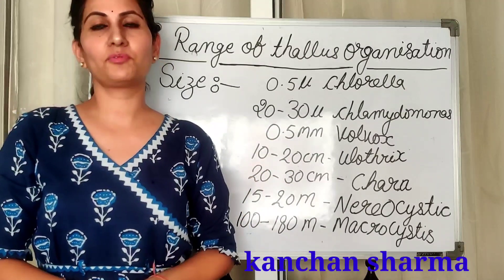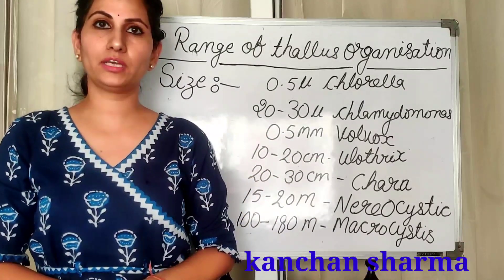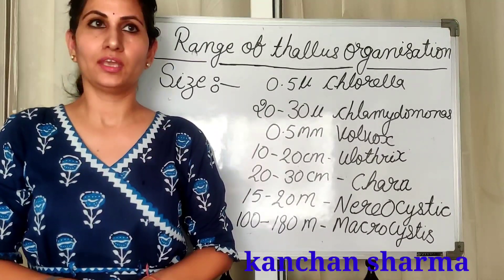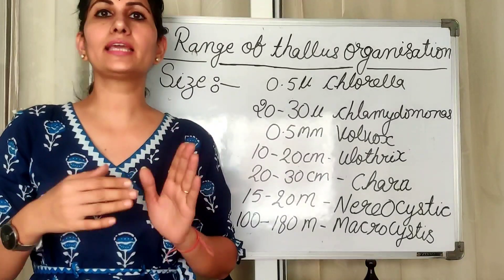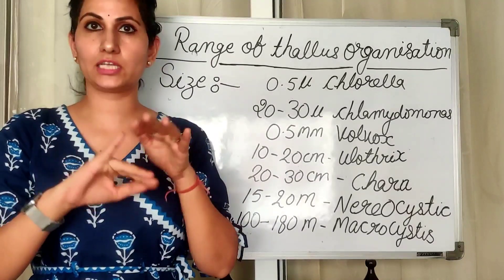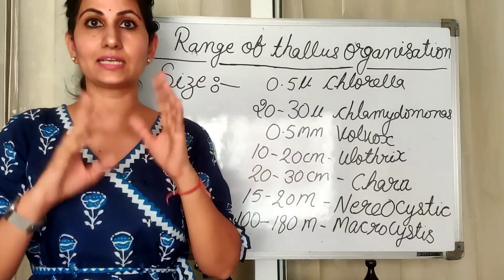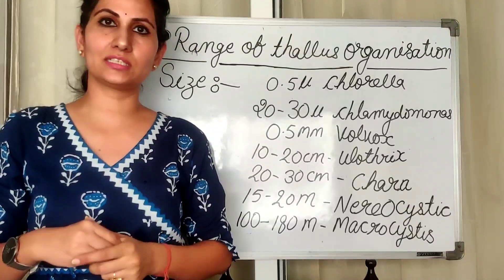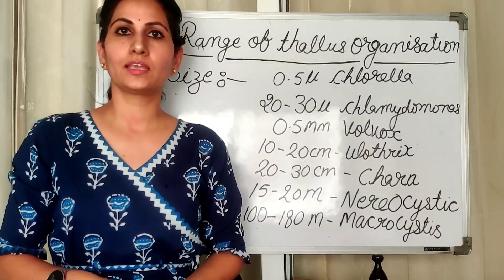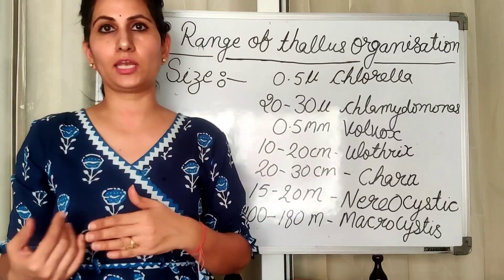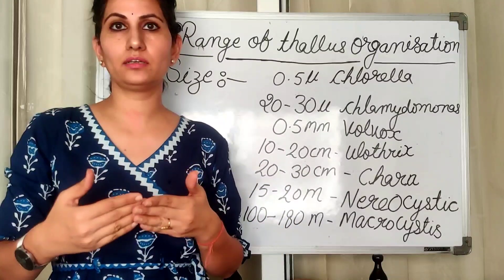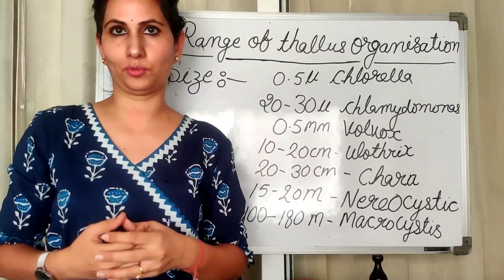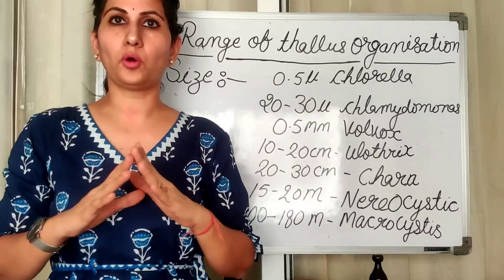Hi everyone, I'm Kanchan Sharma from Impact Learning Classes. Today we are going to discuss about different ranges of thallus organization in algae. Algae can be seen in different shapes, sizes, structures, and thallus organizations. Algae can range from unicellular to multicellular; they can be filamentous, parenchymatous, or exist as a coenobium.